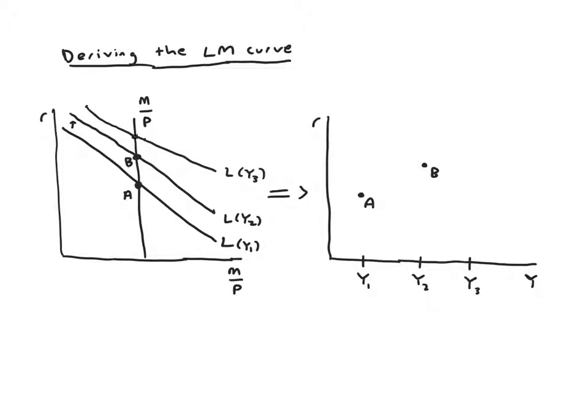So we'll label L money demand with income level 3 and we see again the interest is pushed up a little bit higher. So the point on the right hand side would be at the higher income level we have a higher interest rate so we get a point like C.